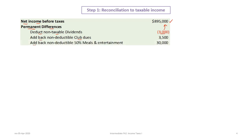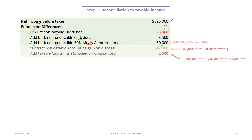The next item to add back is non-deductible meals and entertainment. Generally, 50% of meals and entertainment are not tax deductible. The total meals and entertainment are $60,000, so 50% is deductible and we add back $30,000. The next two items are both related to the disposal of an asset.